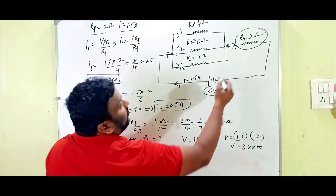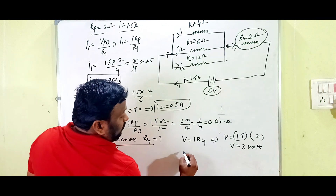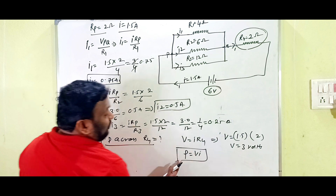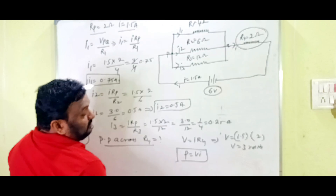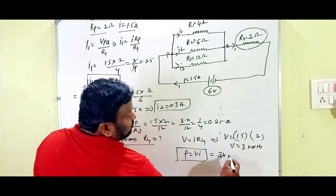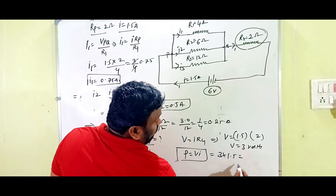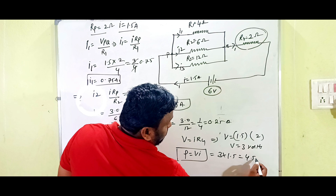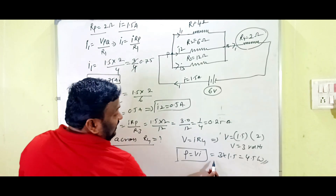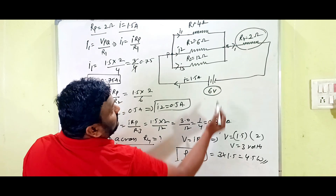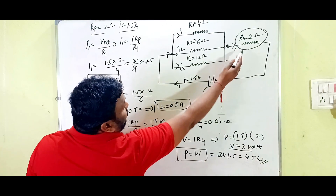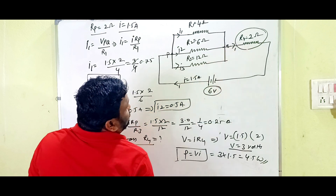Finally, the power used by the 2 ohms resistor. The power formula is P = V × I. V is 3 volts and I is 1.5 amperes, so P = 3 × 1.5 = 4.5 watts. This is the power across the 2 ohms resistor, which also has a potential difference of 3 volts across it.